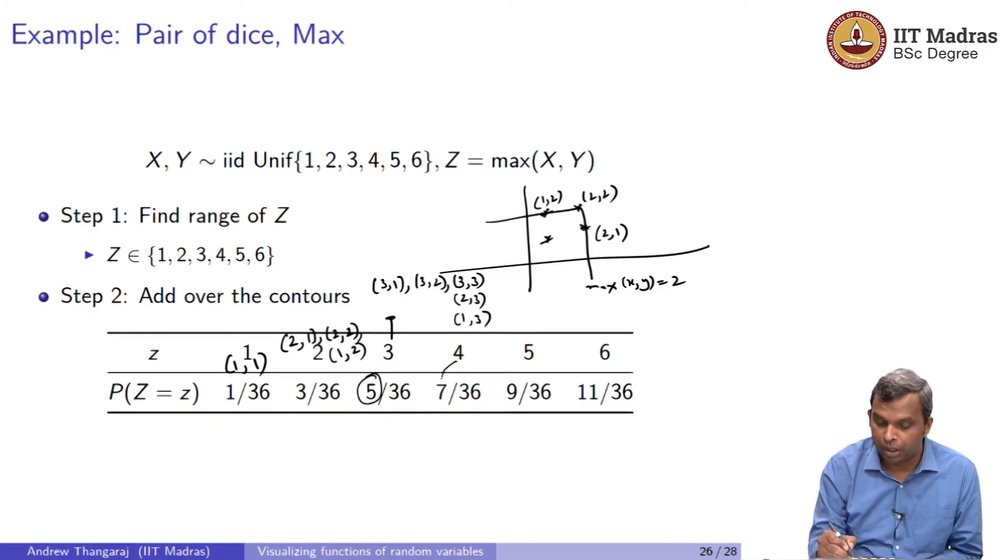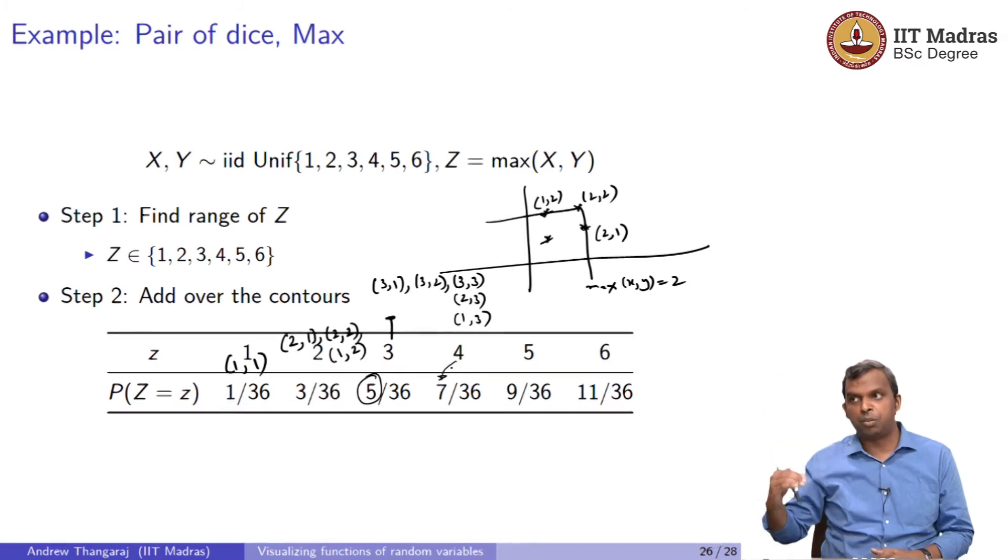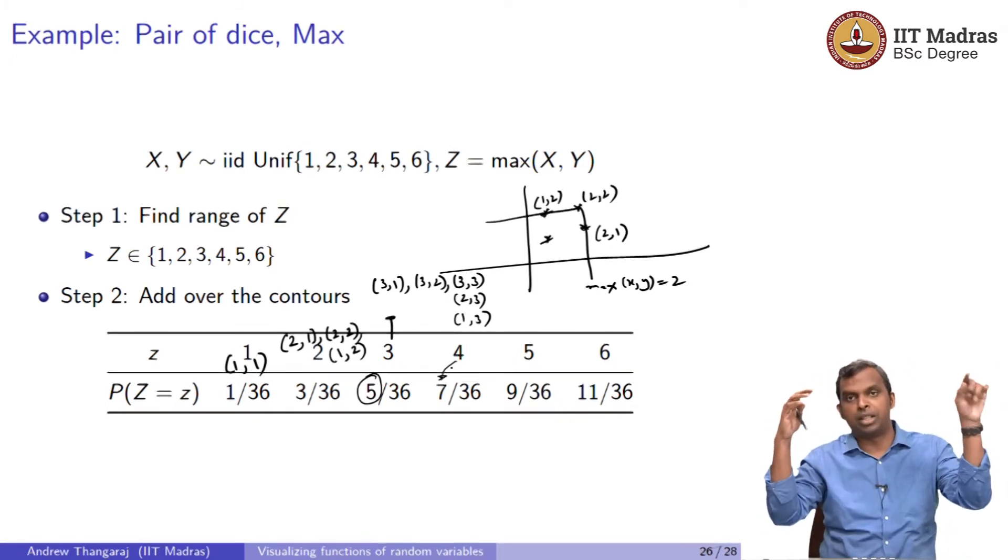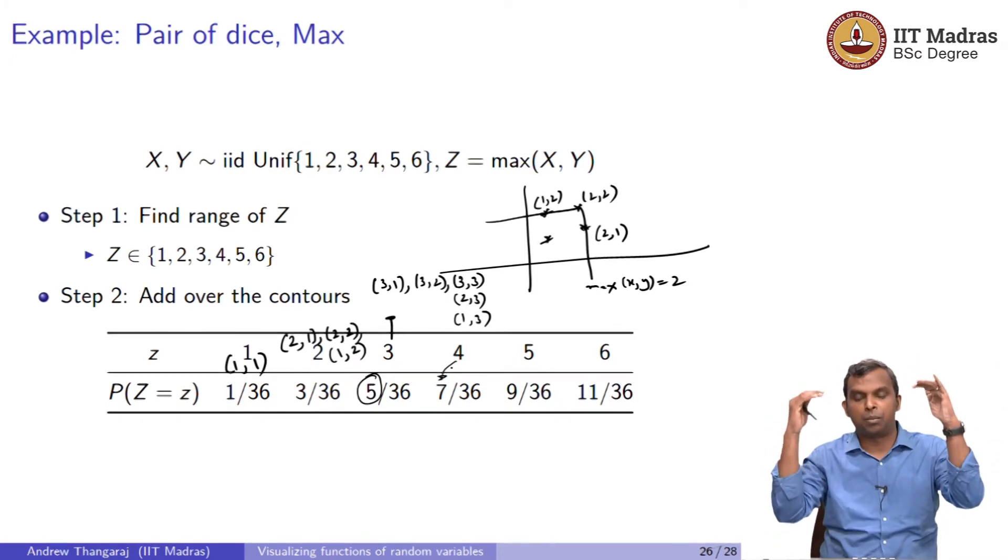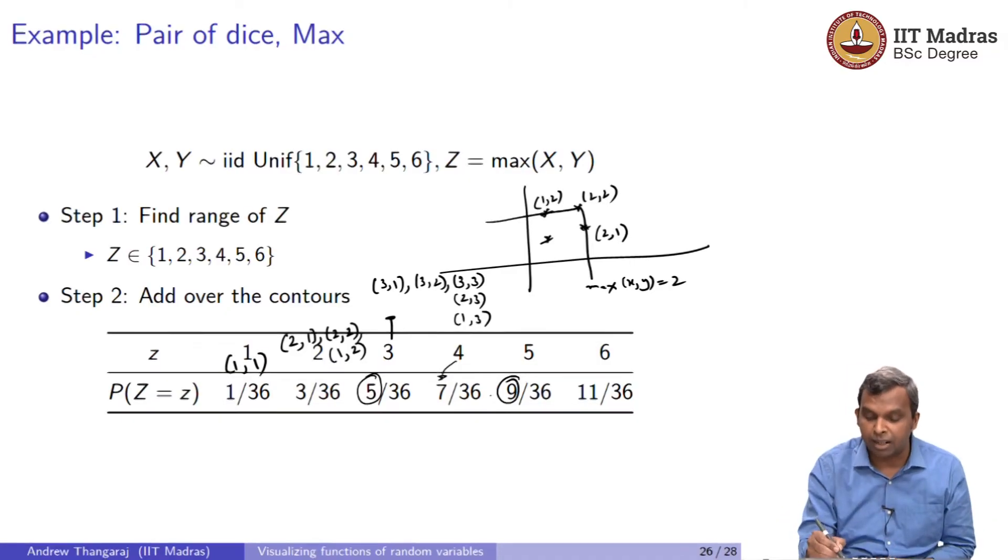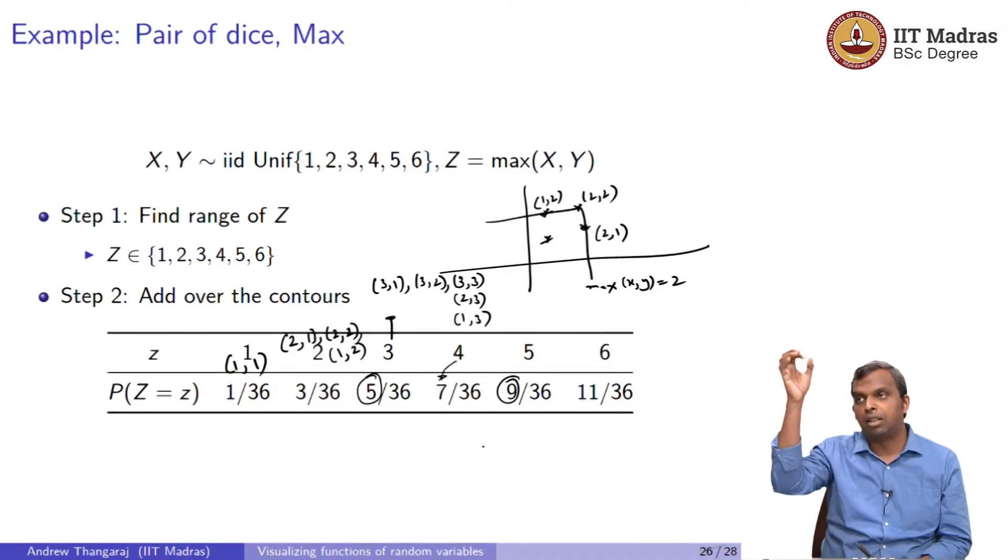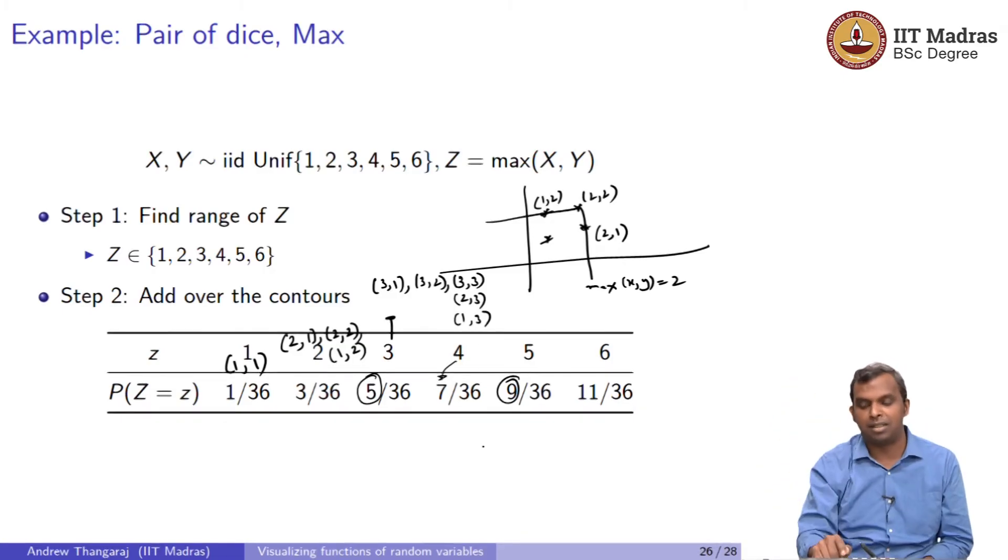For 4, you have 7 possibilities. 4 comma 4, 3 values below it, 3 values to the left of it. 3 plus 3 plus 1 is 7. For 5, you will get 9. How? 5 comma 5, 4 values below it, 4 values to the left of it. 4 plus 4 plus 1 is 9.